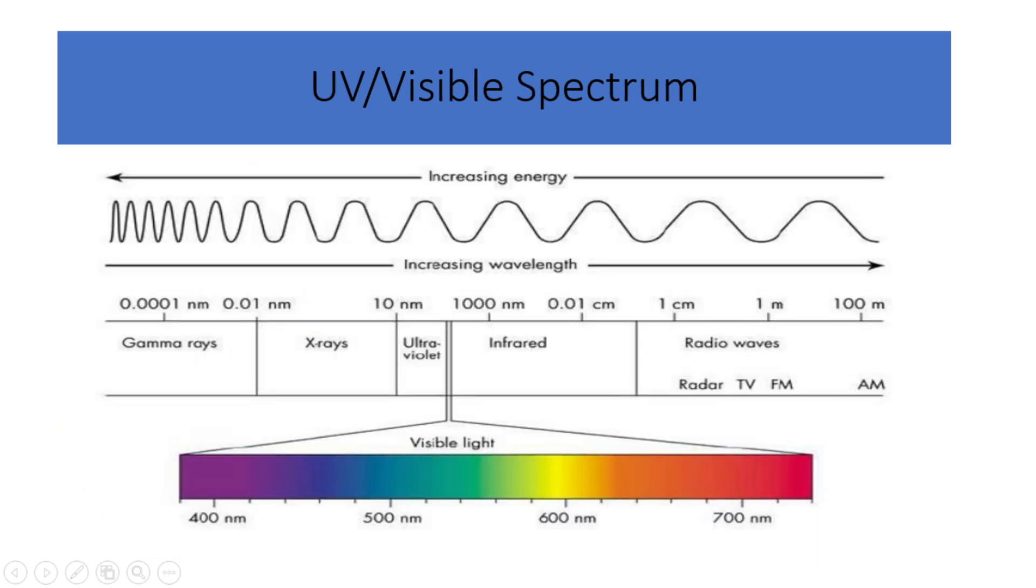Coming back to electromagnetic spectrum. Visible light, within a specific range of wavelengths between approximately 400 to 700 nanometers, is just a small portion of the electromagnetic spectrum. It is the range of electromagnetic radiation that our eyes can perceive, enabling us to see the world around us.